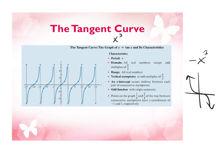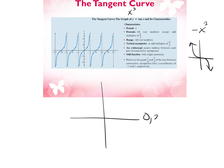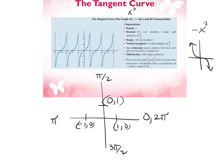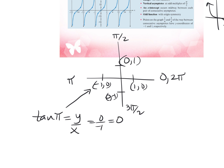We can tie this to our unit circle quadrant angles. At 0 and 2pi, the ordered pair is (1, 0). Pi over 2 uses (0, 1). Pi uses (-1, 0). And 3pi over 2 uses (0, -1). For example, to calculate the tangent of pi, remember tangent is y over x. Using the ordered pair for pi, we get 0 over -1, which simplifies to 0.